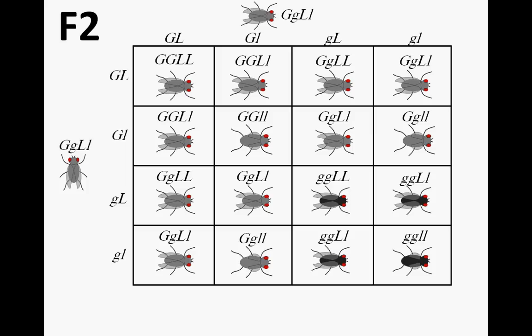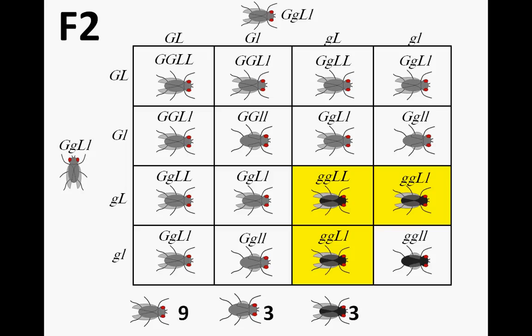Now consider the ratios of observed phenotypes. In our Punnett square, there are nine individuals with gray bodies and long wings, three individuals with gray bodies and short wings, three individuals with black bodies and long wings, and finally only one individual with both recessive traits — black body and short wings.